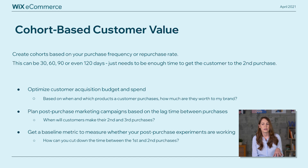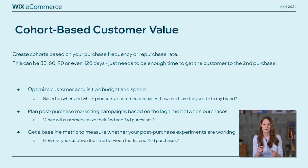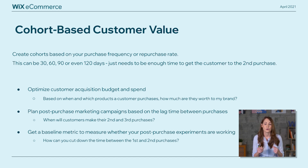We create cohorts based on purchase frequency or repurchase rate. A cohort is essentially a group of customers that join during the same period of time — 30 days, 60 days, even 120 days. We just need enough time to get the customer to that second purchase. By looking at these shorter timeframe cohorts, we're able to optimize our acquisition budget, plan post-purchase marketing campaigns based on the lag time between purchases, and have a baseline metric to measure whether our post-purchase marketing activities are actually working.